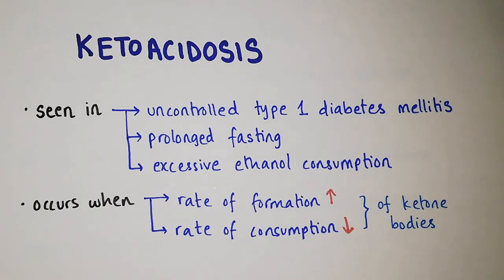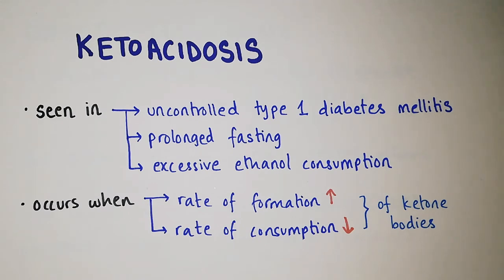In this video, we are going to discuss ketoacidosis. It is seen in uncontrolled type 1 diabetes mellitus, in prolonged fasting, and in excessive ethanol consumption.